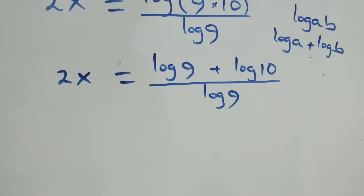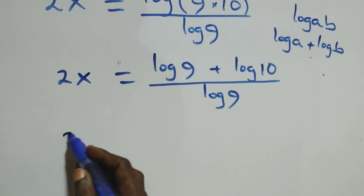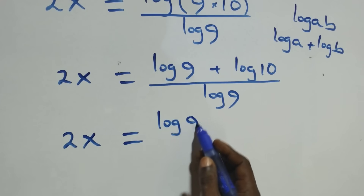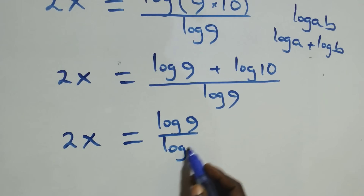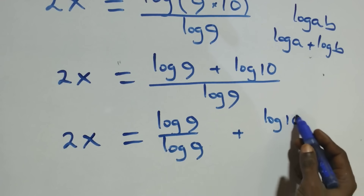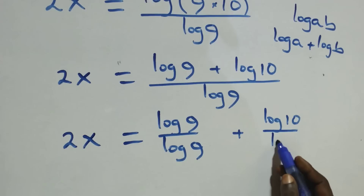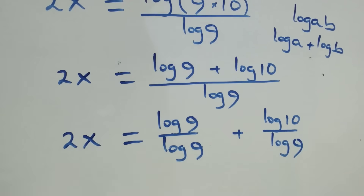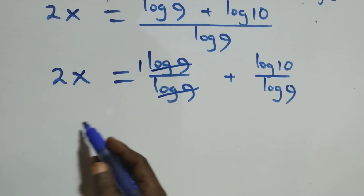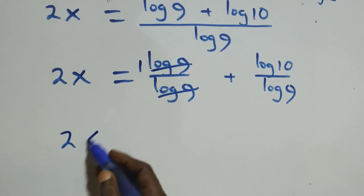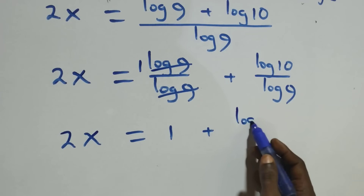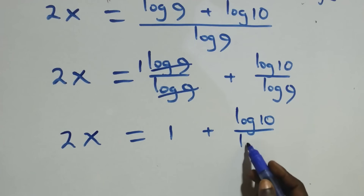Here we have log 9 plus log 10 over log 9. Separating this, the log 9 terms cancel each other, leaving 1, and we also have log 10 over log 9, so 2x equals 1 plus log 10 over log 9.